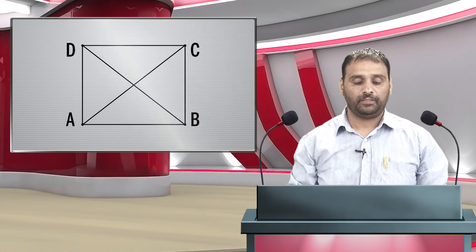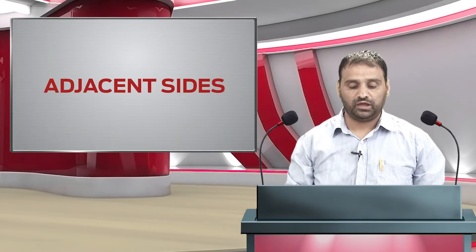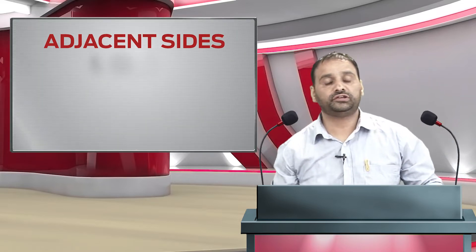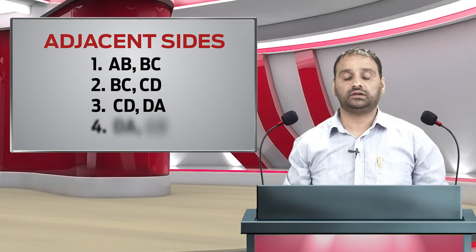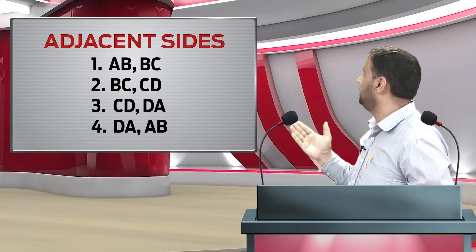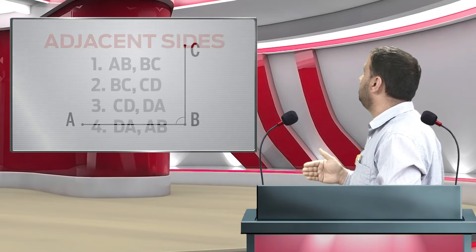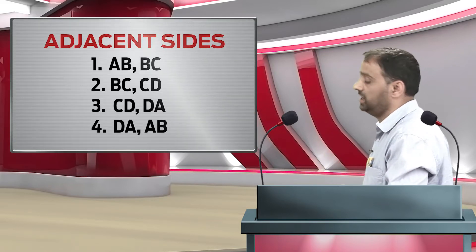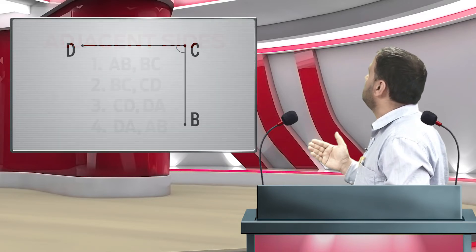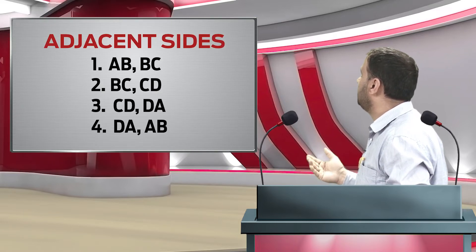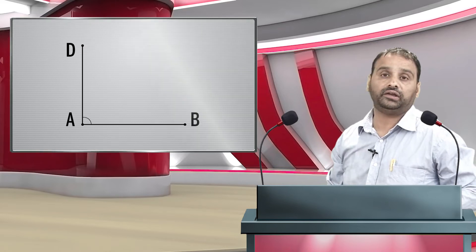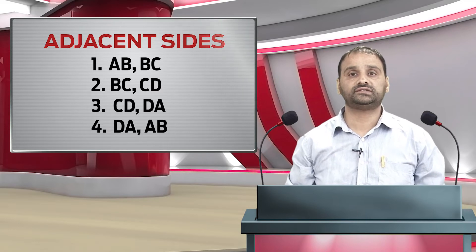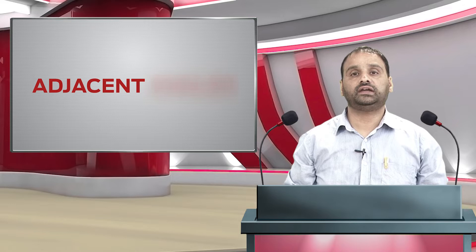In a quadrilateral, if any two sides have one point in common, we call them adjacent sides. There are four pairs of adjacent sides in a quadrilateral. They are AB and BC (where B is the common point), BC and CD (where C is the common point), CD and AD, and AD and AB. In all, we have four pairs of adjacent sides in a quadrilateral.